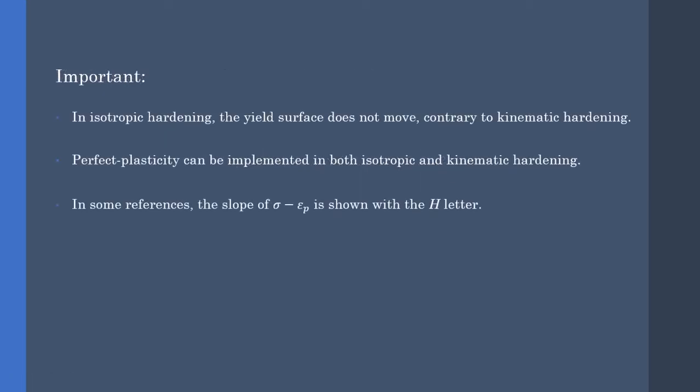Some important notes. In isotropic hardening, the yield surface does not move, contrary to the kinematic hardening. Perfect plasticity can be implemented in both hardening models. And in some references, the slope of stress plastic strain is shown with the italic H letter.